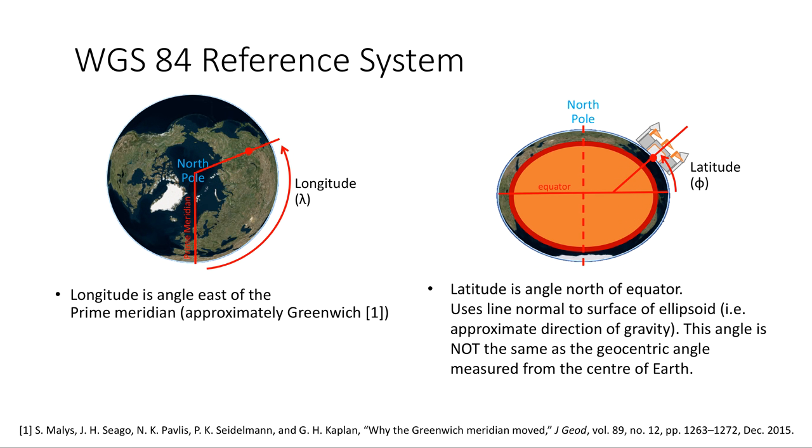For measuring latitude, there's an important subtlety that I want to address. When we're working with an ellipsoidal Earth, height is measured normal to that ellipsoid. It's also the direction of gravity, or at least the approximate direction of gravity. One way to think about that is if the ellipsoid was covered in water, then gravity is going to be normal to that surface, because water is usually flat.